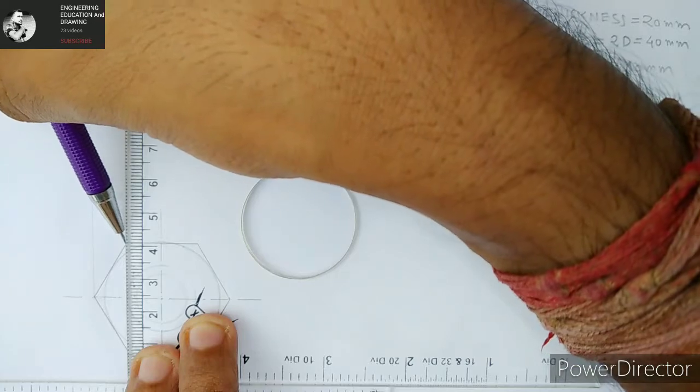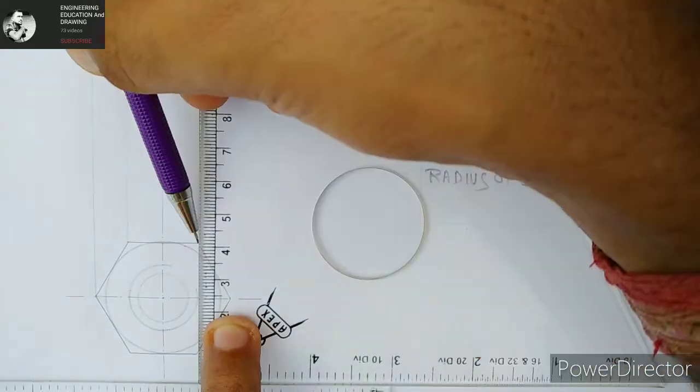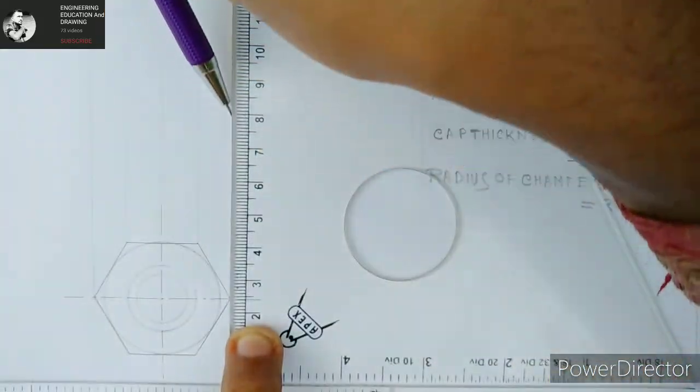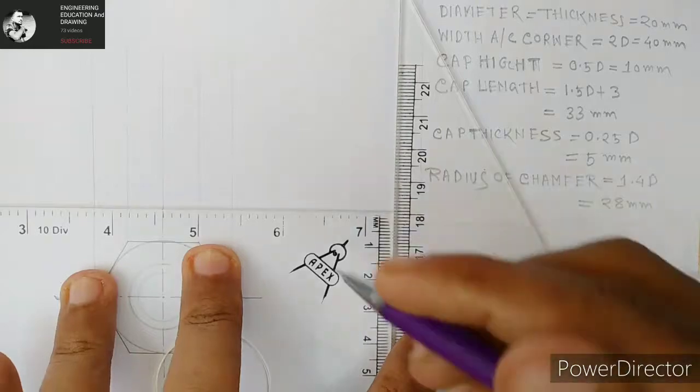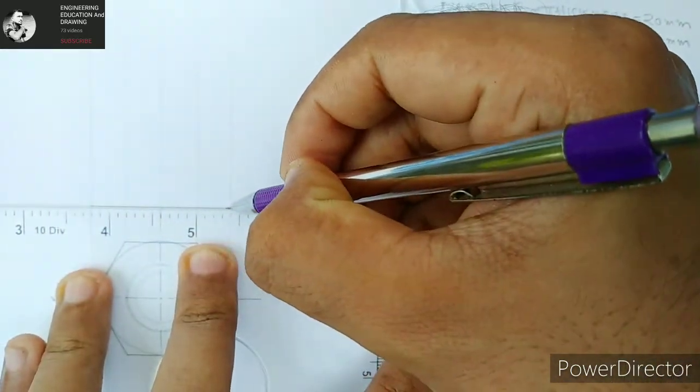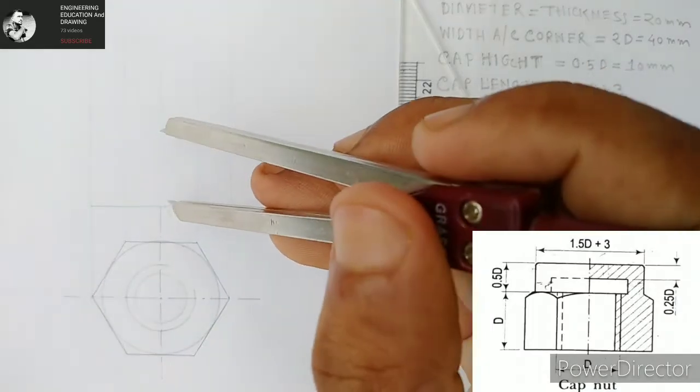Now we're going to project all the points upwards to make the front view. For the making of front view, we're going to take a specific distance. I'm taking 10 millimeters.